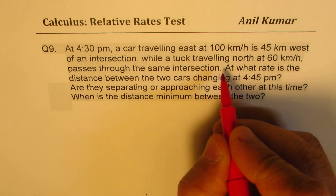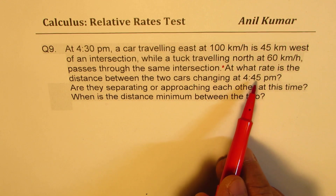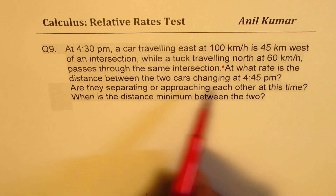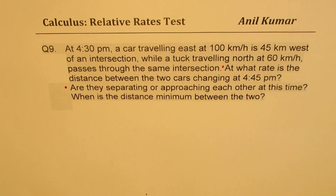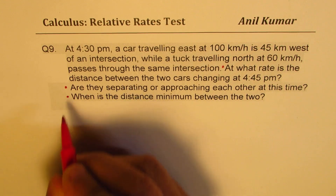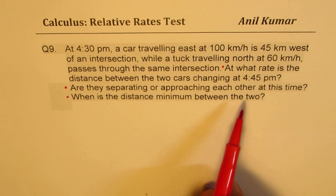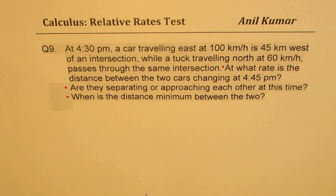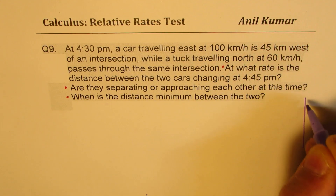The three things we need to find are: the rate at which the distance between the two cars is changing at 4:45 — that is 15 minutes after — and from that rate we figure out whether these vehicles are approaching or separating. The last part, finding when the distance is minimum, helps us verify whether our answer for separating or approaching is correct.